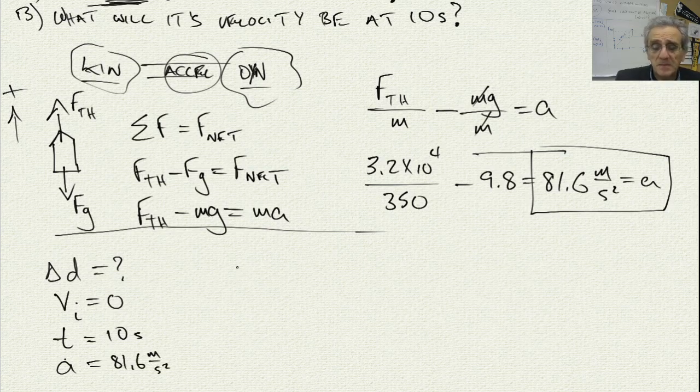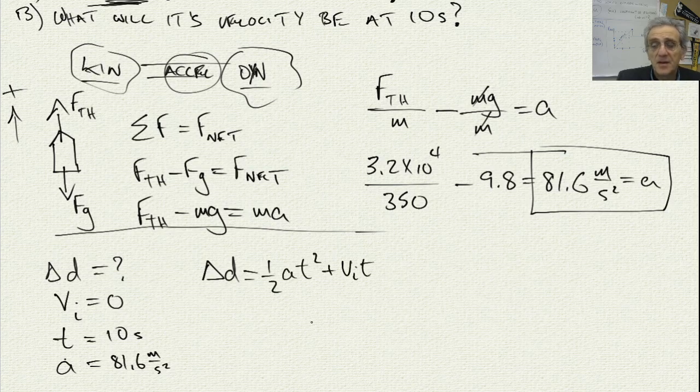So when I look at this, I should be able to immediately recognize that of my three kinematics equations, I need this one. And I know my initial velocity is zero, so this term disappears.